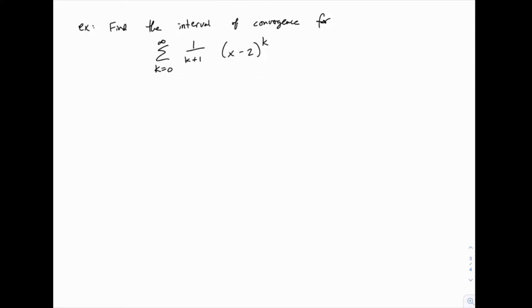You're going to find the interval of convergence for a power series, specifically the series from k equals 0 to infinity of 1 over k plus 1 times (x minus 2) raised to the power of k. I've already shown you the answer to this one, but here we're going to work it out and see how we arrive at that answer.